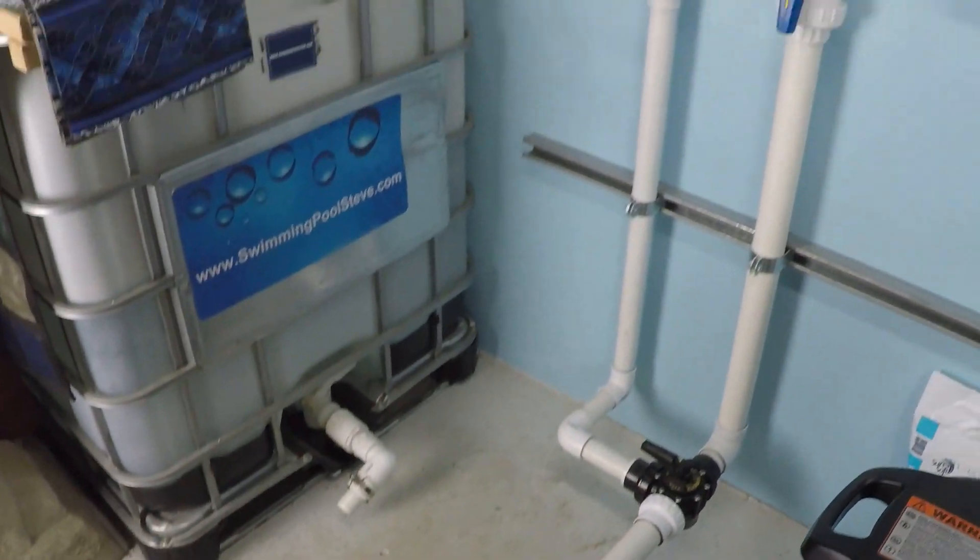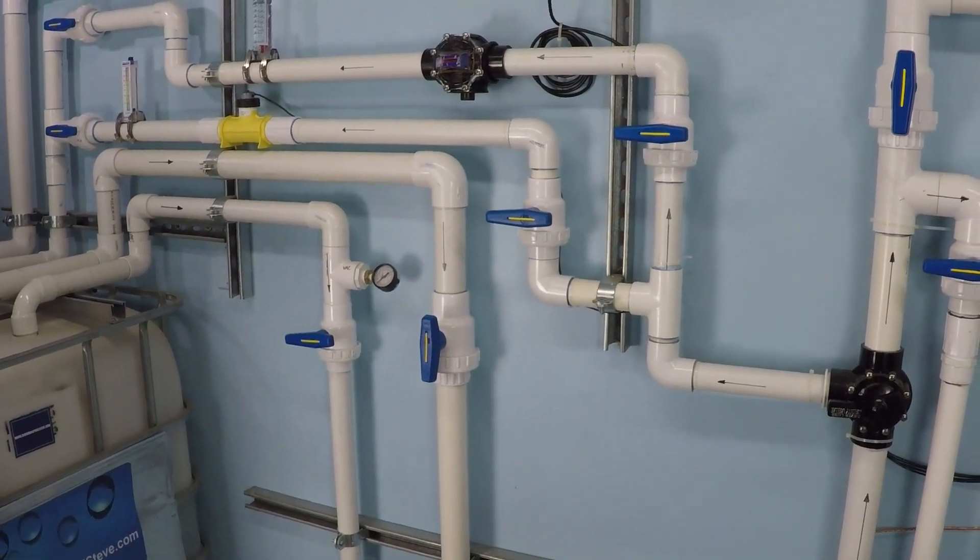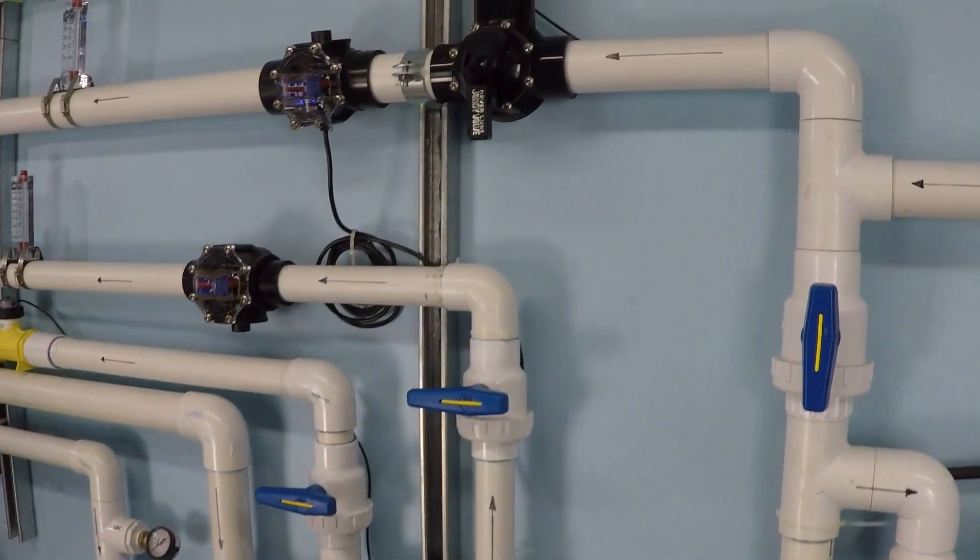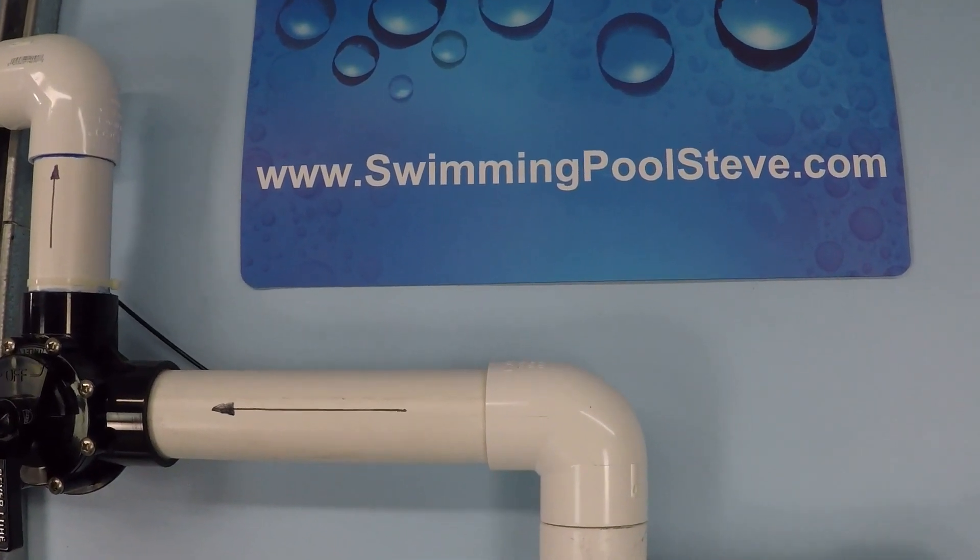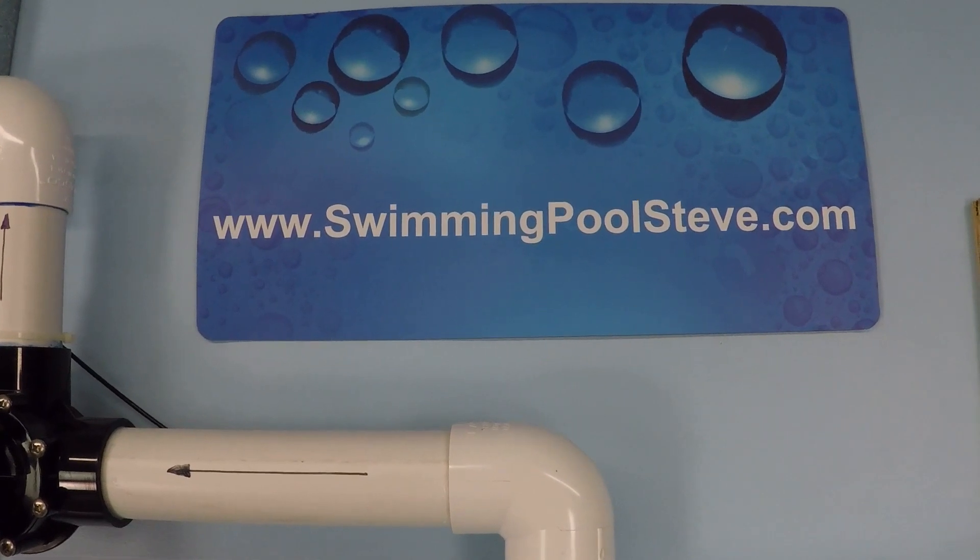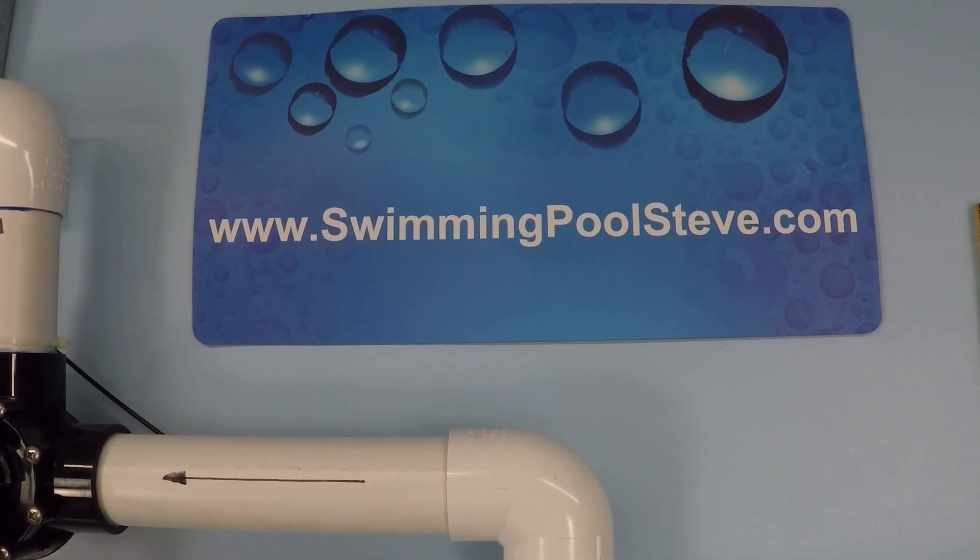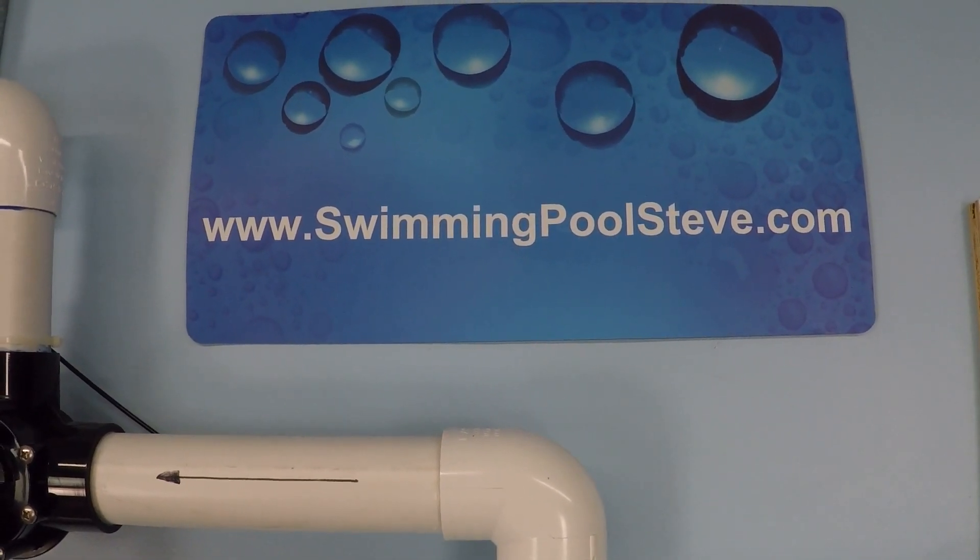And again the end takeaway here is every swimming pool system is different so this is just one example of a couple of pumps running on the same system just to help you get a little bit more of an idea of an apples to apples comparison between these pumps. If you found this information helpful please be sure to like this video and subscribe to my YouTube channel and you can check out my website swimmingpoolsteve.com.